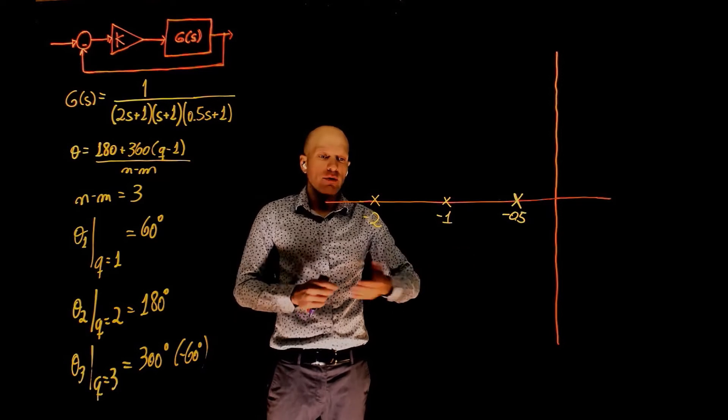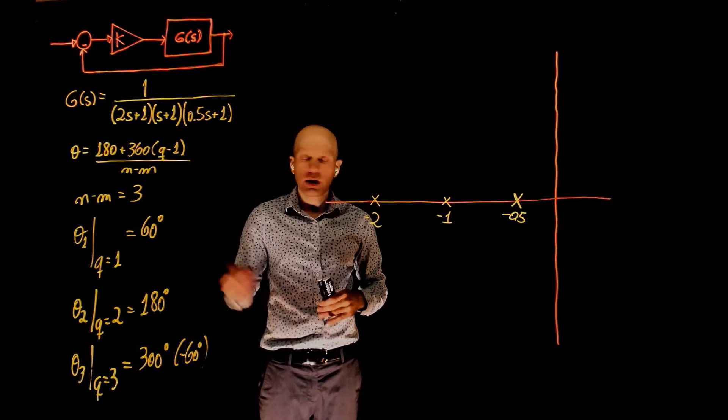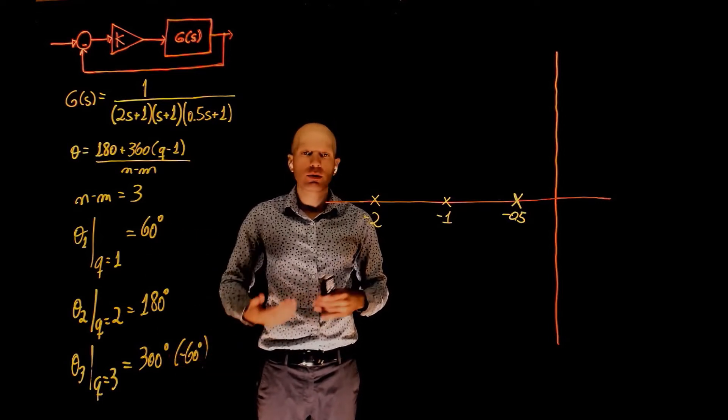We have three poles. We have no zeros to go to. So all these three poles have to go to infinity somehow. And these are the angles of the asymptotes that will take them to infinity.